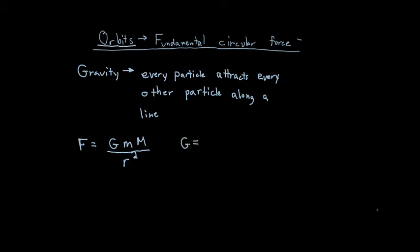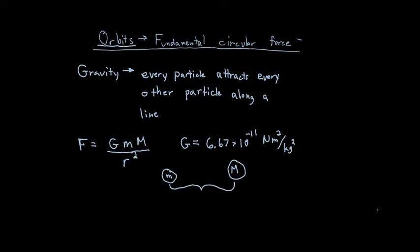The universal gravitational constant G equals 6.67 times 10 to the negative 11 Newton times meters squared over kilograms squared. Picturing two masses, little m and big M, separated by distance r center to center, each experiences a gravitational force due to the other. These forces are equal and opposite, which we know from Newton's third law.